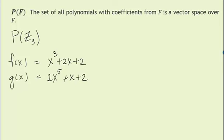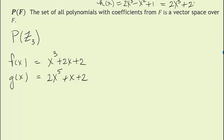Just off to the side: if I said let H(x) = 2x³ - x² + 1, well -1 is the coefficient of x², and that's not the usual way to write the additive inverse of 1 in Z_3. So I wouldn't write it that way. I would write 2x³ — the additive inverse of 1 in Z_3 is 2 — so I write plus 2x² + 1. Now my coefficients are written in {0, 1, 2}.